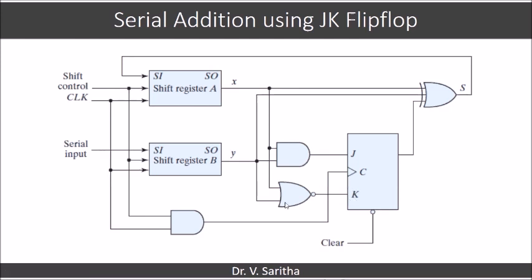And as we have seen before, shift control and clock input should be ANDed and given as a clock pulse for the JK flip flop. Clear input is given in order to make the flip flop bit initially to be zero. So this is how we can design serial addition using JK flip flop.